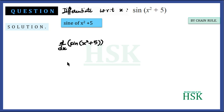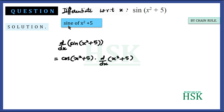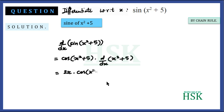So d/dx of sin(x² + 5): differentiate the outer function — sine becomes cos — and all terms inside the bracket are written with it. Then the terms inside the bracket are further differentiated with respect to x and multiplied. The differentiation of x² + 5 is 2x + 0, giving the result 2x · cos(x² + 5).